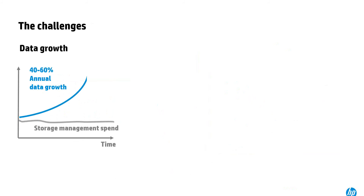Looking at these challenges in more detail: the first is data growth. Typically we see data growth of 40 to 60% at our customers, meaning data is doubling every 18 months. Most of that growth comes from unstructured data. A storage admin is responsible for growing the OPEX spend for managing this data, but that spend is pretty much flat — in some cases there's pressure to reduce it. There's a widening gap between the rate of data growth and the expenditure of managing it.